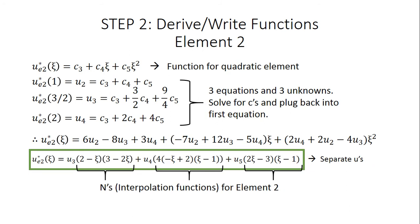We do the same thing for element 2, using the same quadratic element function. Element 2 has three nodes: one at 1, one at 3/2, and one at 2. We plug these into the equation, giving us three equations with three unknowns again. We separate out the u's to get our interpolation functions, and end up with the equation in the green box giving our three interpolation functions for element 2.